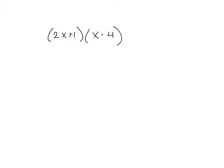So if we are going to distribute, a lot of us are using a strategy to make sure that we multiply the 2x by the x, the 2x by the negative 4, the 1 by the x, and the 1 by the negative 4.